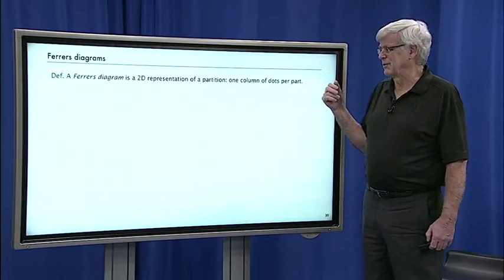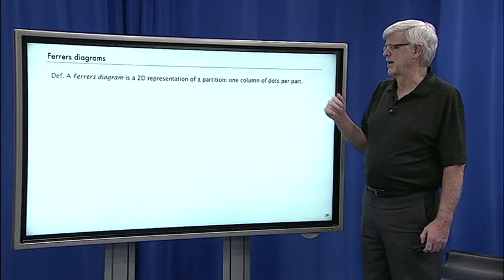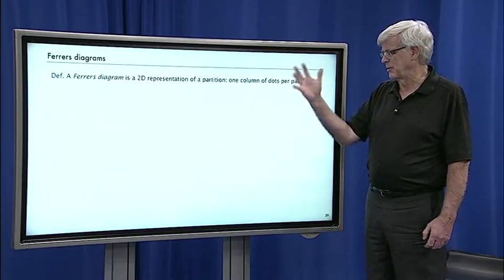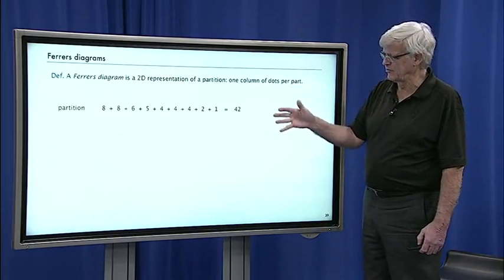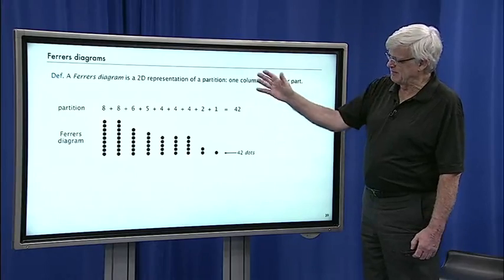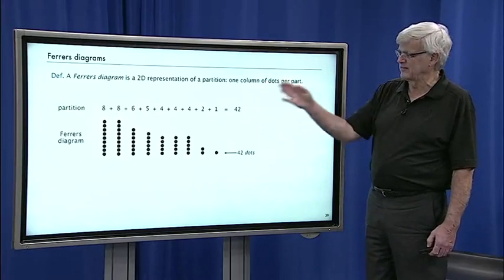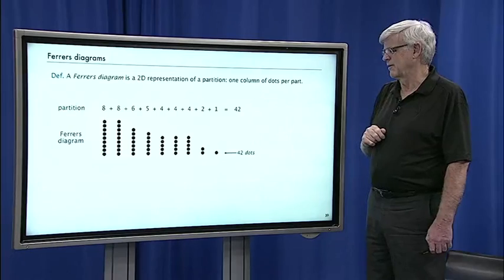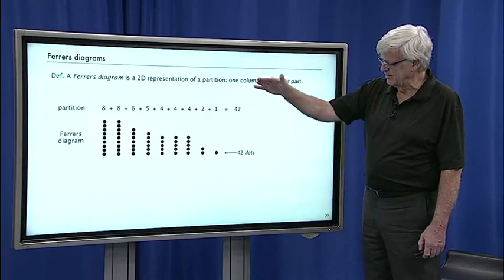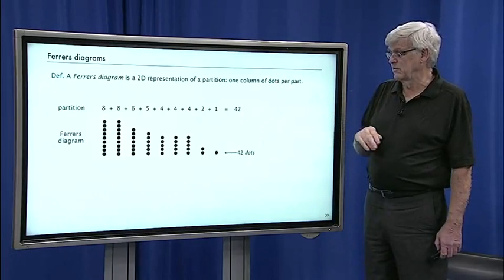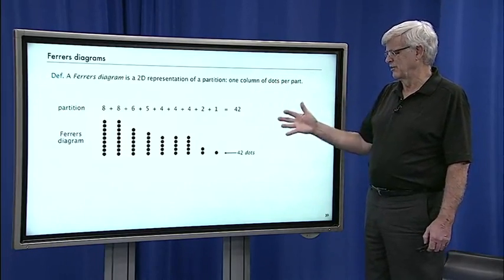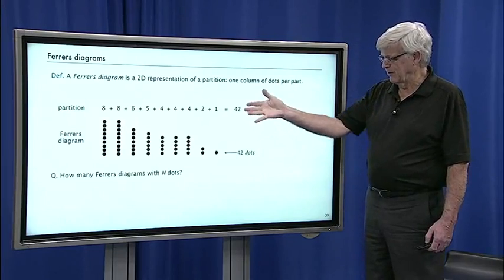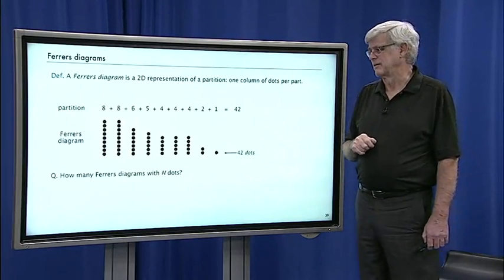And people have studied this actually quite a bit. There's a thing known as a Ferrars diagram, which is a 2D representation of the partition, where you just put the parts in order. You just turn them on end and make columns out of them. So if you have that partition, 8 plus 8 and so forth, parts are in decreasing order. If you just turn the dots on end, you get this Ferrars diagram of the 42 dots. And it's non-increasing, so it's a staircase down. The question is how many Ferrars diagrams are there with n dots?